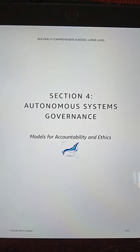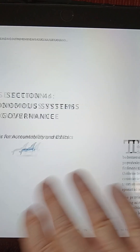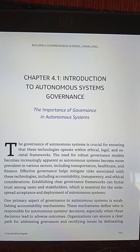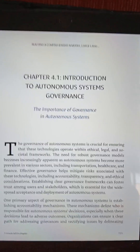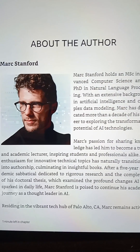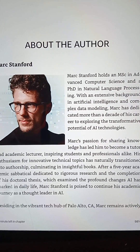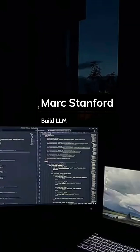And finally, in section four, the importance of autonomous systems governance is explained. Topics like bias audits, transparency, and accountability are highlighted.